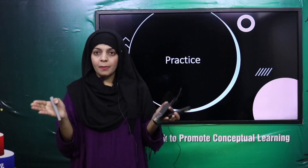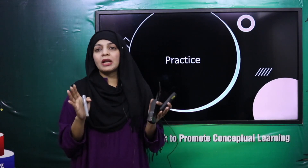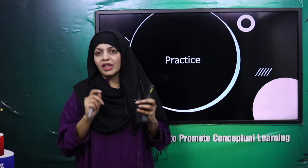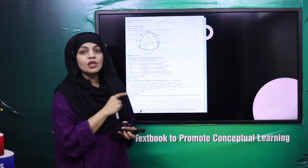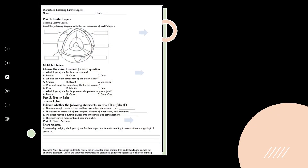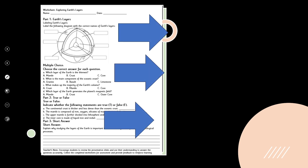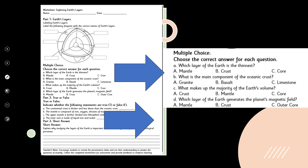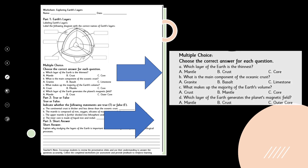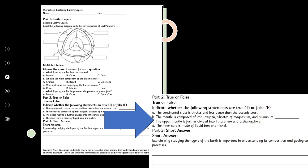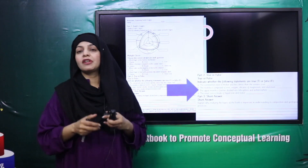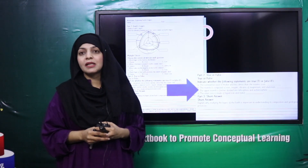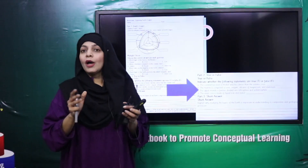My dear students, the link to the 3D model is given in the description of this presentation where you can practice and look at the different layers of the earth by yourself. For practice, you can download the worksheet from the description box of this video. The worksheet has different sections: first, label the different layers of the earth; next, multiple choice questions to select the correct option; and the last part is true/false and short questions. Pause the video and complete the worksheet. This is a group activity - teachers, divide students into groups to complete the worksheet and discuss among themselves.